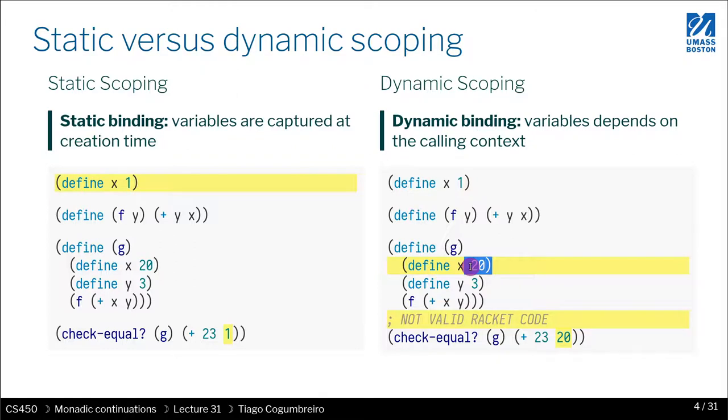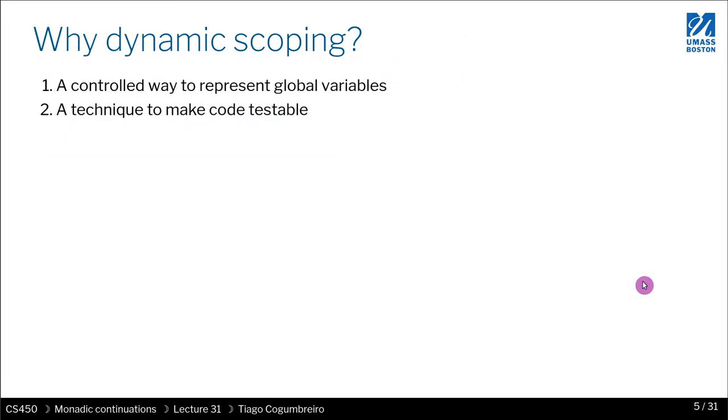So bottom line, in short, all variables become globals. It's quite an unwelcome feature. However, there are use cases. We're going to study two use cases.